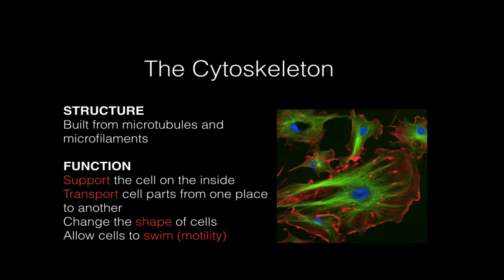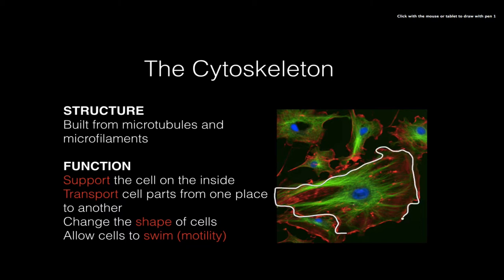The structure of the cytoskeleton is based on microtubules and microfilaments, which are built by enzymes in the cytoplasm of the cell. If you look in this picture here, the microtubules and the microfilaments are color-coded with green and red fluorescent dye. You can see how, if I trace the cell membrane of this animal cell, the cytoskeleton gives the cell its shape.